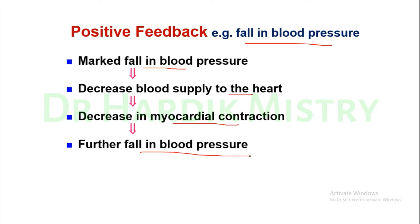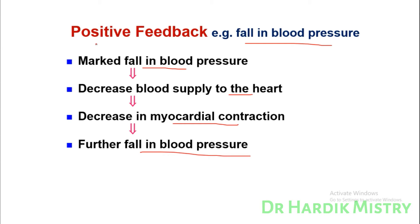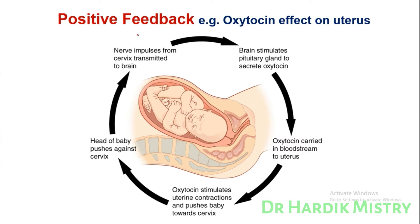This illustrates the critical, dangerous condition of the positive feedback loop. However, the positive feedback loop can also help our body. For example, the oxytocin effect on the uterus during delivery of a baby — whatever procedure occurs inside the uterus, baby, vagina, and cervix is under control of the positive feedback mechanism.